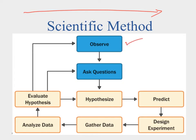We always want to basically start with an observation. When you have the observation, it's going to prompt you to ask a question. And when you ask a question, you come up with a solution, which is your hypothesis. Your hypothesis is then going to lead you into what we call prediction — what do you think is going to happen? Based on your explanation, what would we expect to see?